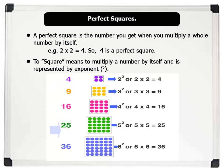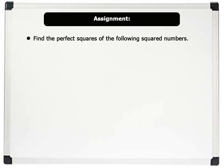All the products of the squared numbers are called perfect squares. Now, pause this video, write these numbers in your notebook, and find their perfect squares.